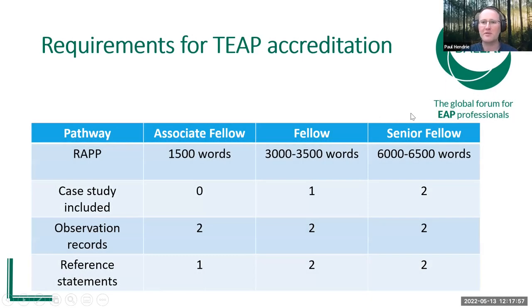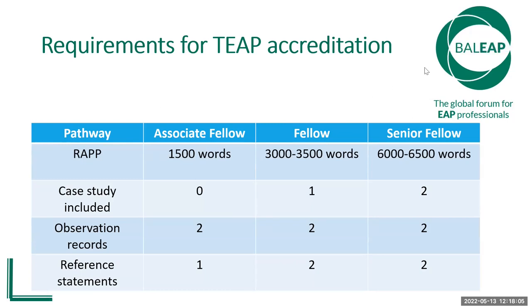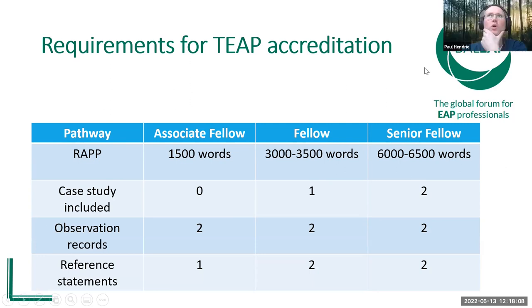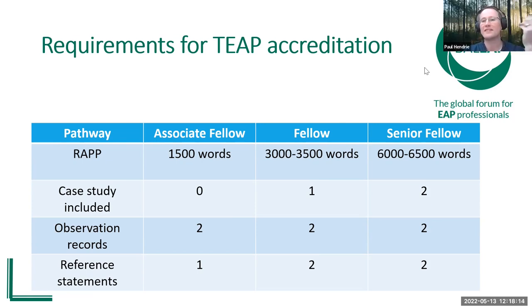A little bit about the requirements now — this hasn't changed very much, though there has been one change which I'll talk about in a moment. Submitting your application for accreditation involves the submission of a portfolio of evidence and a written account. The written account is called a RAP — a reflective account of professional practice.